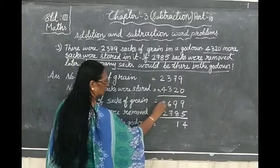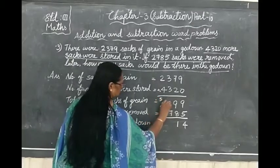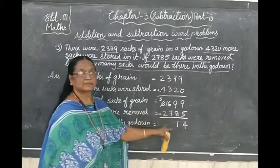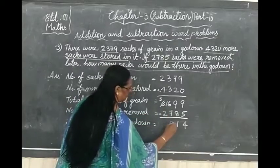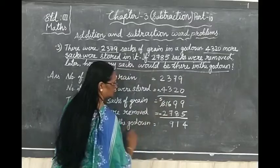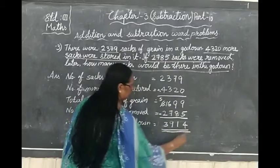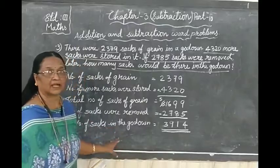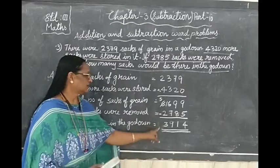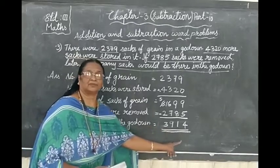We have to borrow. Now 16 minus 7 is 9. 5 minus 2 is 3. Now tell me, how many sacks of grains are left in the godown? 3,914.